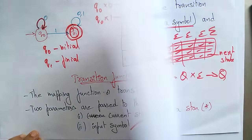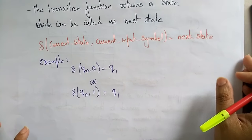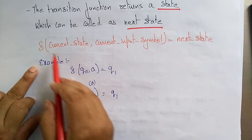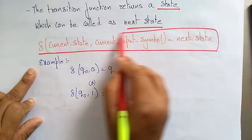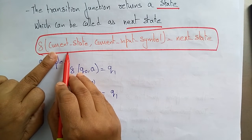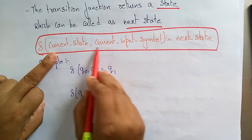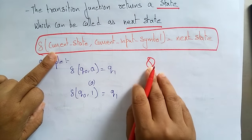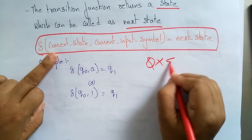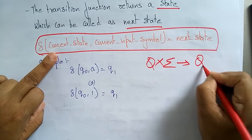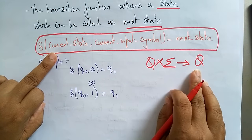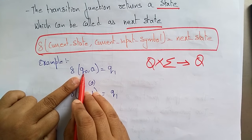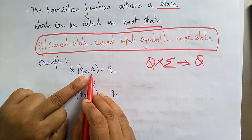The formula is: delta(current state, input symbol) = next state. That is, delta maps Q cross sigma to Q, where Q is the current state and sigma is the input symbol, yielding the next state. For example, delta(q naught, a) = q1 means on state q naught with input a, the automata moves to q1.